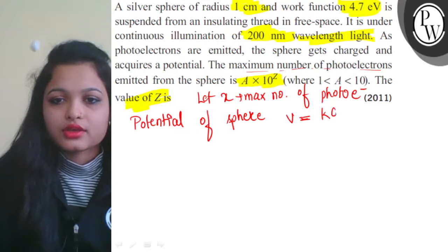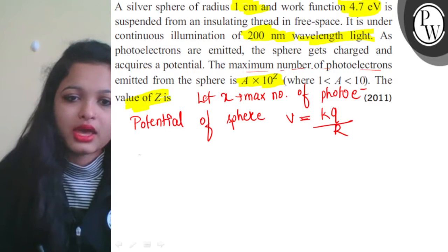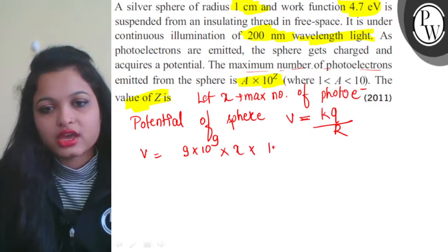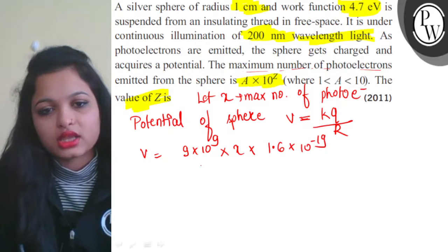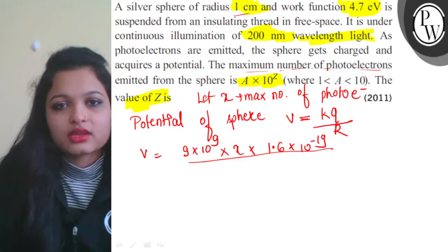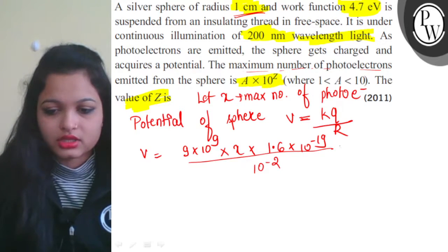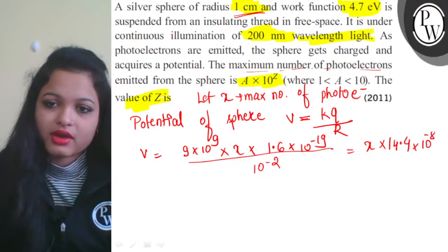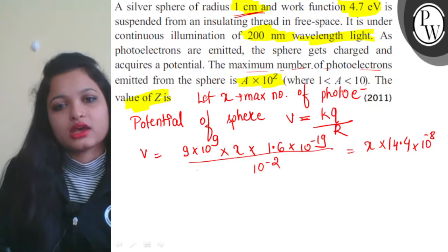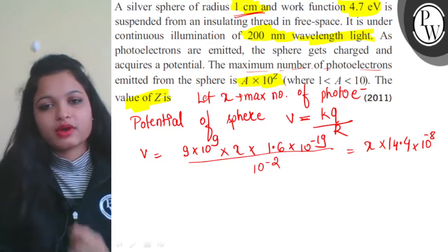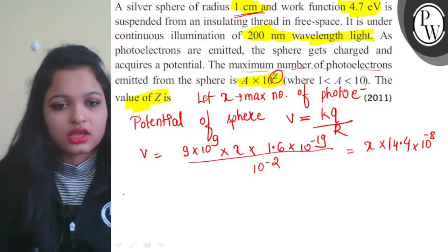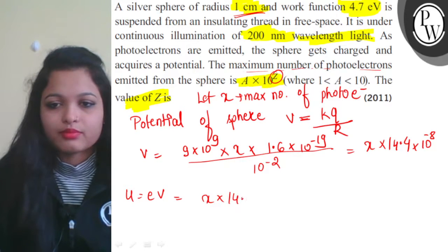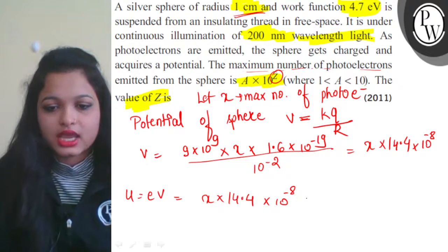The potential of the sphere will be V = kq/r. Here k = 9 × 10^9 (constant), charge q = x × 1.6 × 10^-19, and r = 1 centimeter = 10^-2 meters. So when we substitute, V = x × 14.4 × 10^-8 eV. Now we need to find the value of a × 10^z.